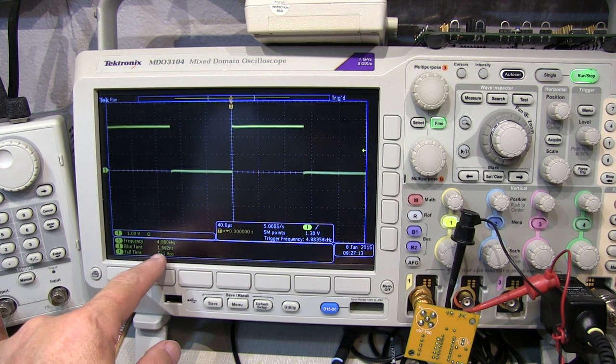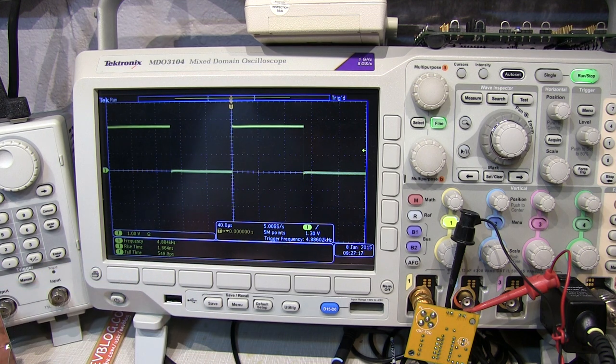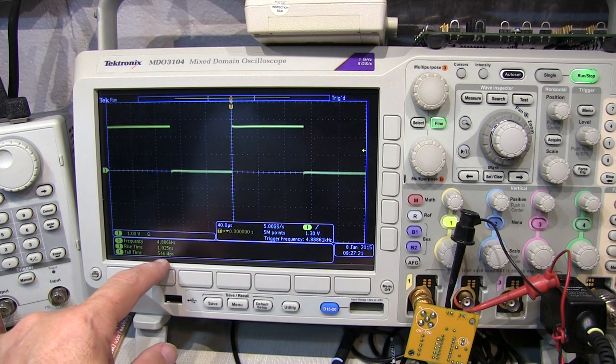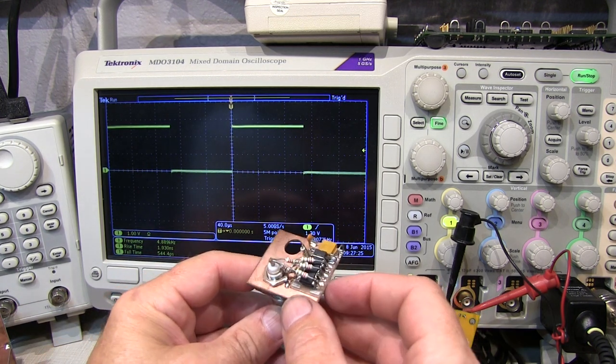Look at that rise time. I was seeing it as 1.8, 1.9, you know, 2 nanoseconds. That's basically the same that we saw with my hand-built prototype. And fall time, you know, 550 picoseconds. That's actually even a little bit faster than my hand-built prototype. And that's not surprising because I got some flying leads here.